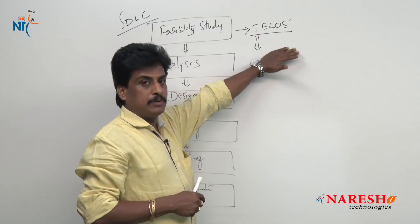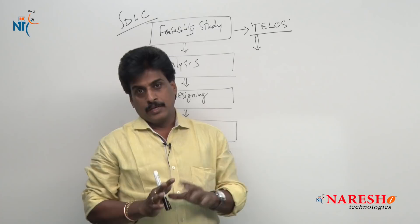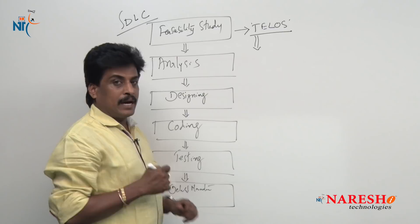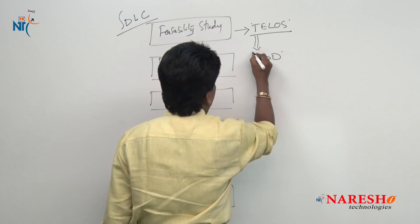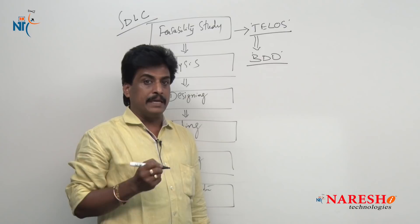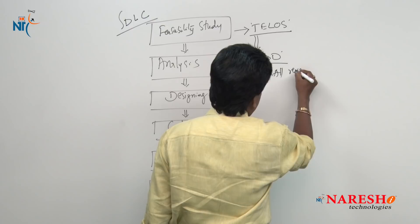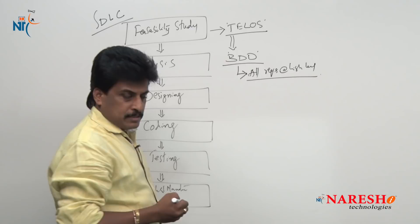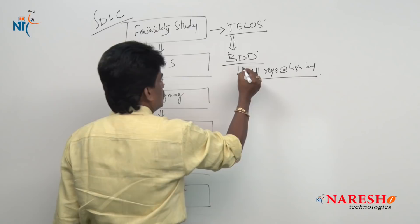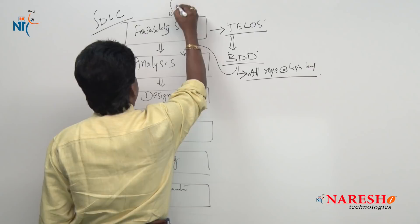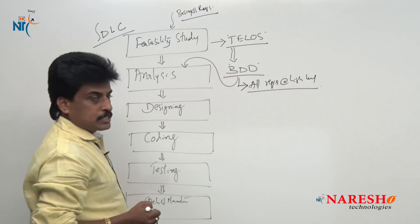TELOS is a very powerful formula used in the feasibility study area. Once TELOS is successfully completed and business requirements are gathered, they are written in a separate document called the Business Design Document, or BDD. In this BDD, all the requirements are available at a high level. As technical members, we may be unable to understand it, but it serves as input to the next phase — the analysis phase.